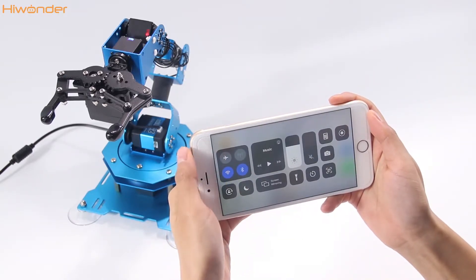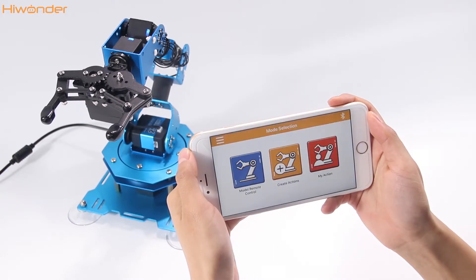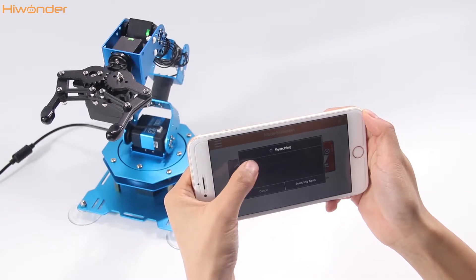Firstly, we need to connect the robotic arm into your app. Turn on the app Bluetooth and GPS. Connect this icon, then choose the X-Arm.